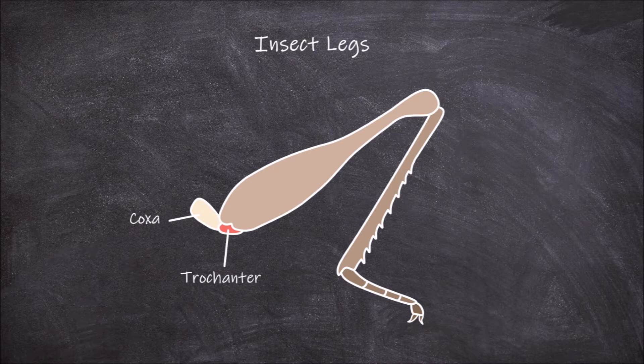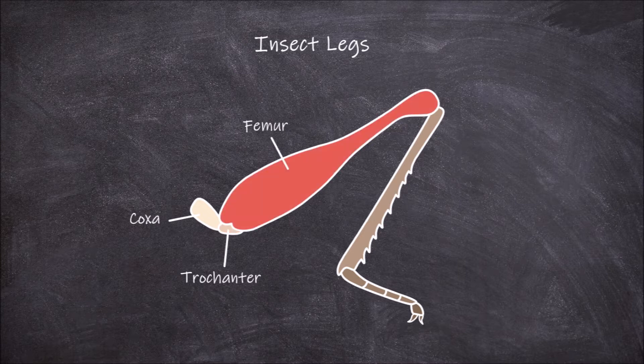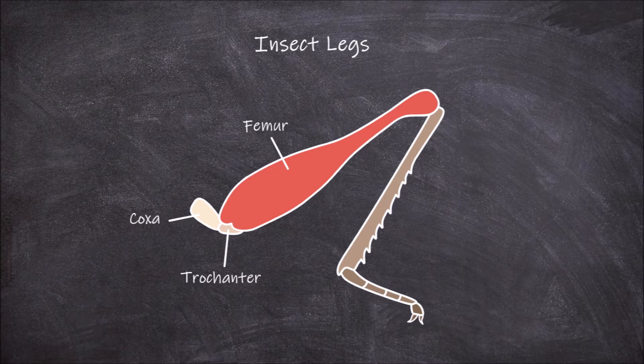The trochanter is a smaller segment of the leg. It articulates with the coxa proximally and the femur distally. The femur is the third segment and is often the largest in terms of thickness.